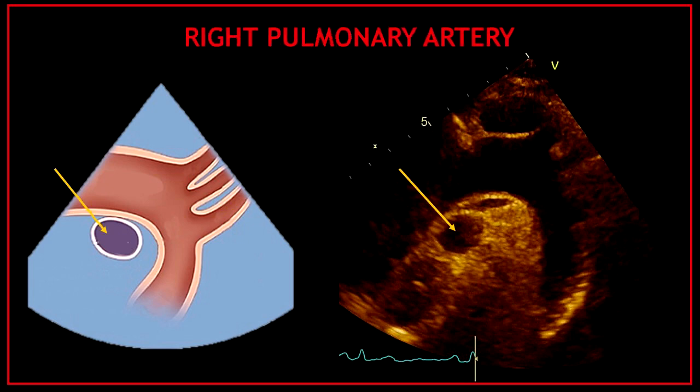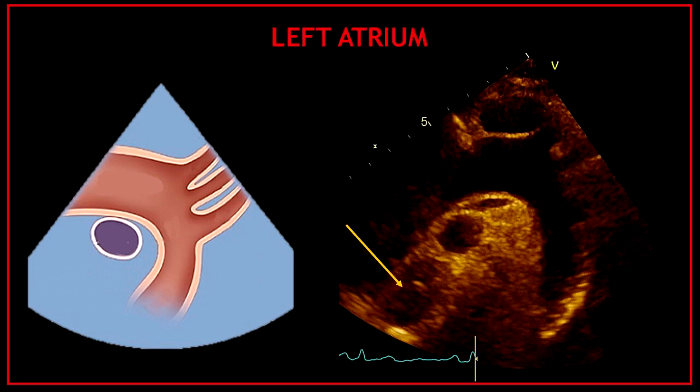Under the aortic arch in this view, you can also visualize the right pulmonary artery, and under the right pulmonary artery, sometimes you will be able to see the left atrium.